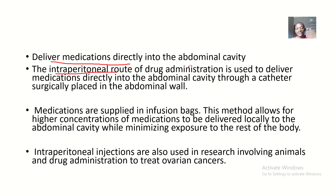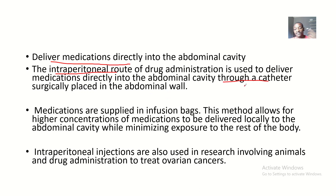The intraperitoneal route of drug administration is used to deliver medications directly into the abdominal cavity through a catheter. It doesn't have to be only a catheter — it could be an injection too, but mostly a catheter because it is painful, so you need something stable there. It could be a catheter, a syringe, or a needle. You deliver it into the abdominal cavity using a syringe or catheter that was surgically placed in the abdominal wall. Medications are supplied in infusion bags.